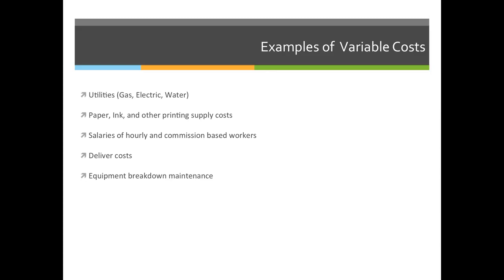We do have to budget for equipment breakdown and maintenance. We have no idea when the press is going to break down, or a computer or server might blow — something like that. So you have to budget for it and make sure you have money to fix the equipment, but you never know how much it's going to cost or when it's going to break, and that makes it variable.